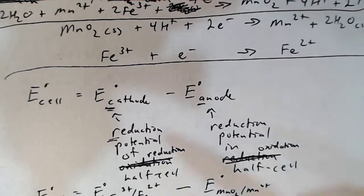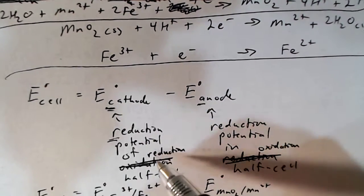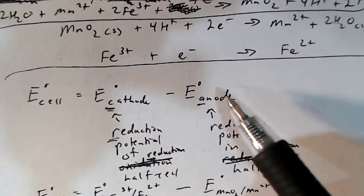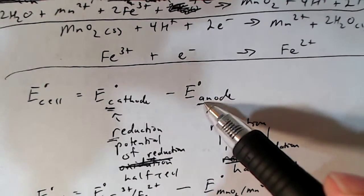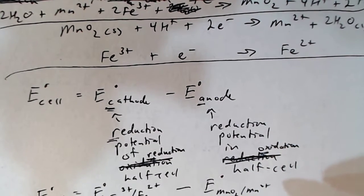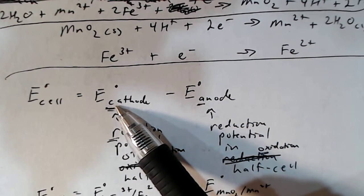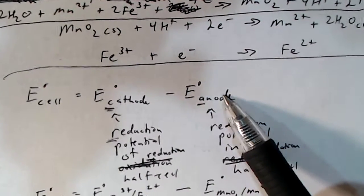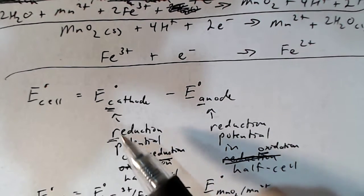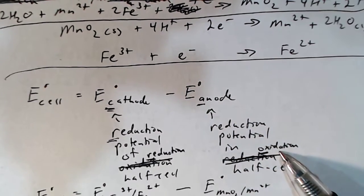The voltage of the cell is equal to the reduction potential of the reaction that occurs at the cathode minus the reduction potential of the reaction that occurs at the anode. At the cathode, which starts with a consonant, there's going to be reduction, which also starts with a consonant. At the anode, which starts with a vowel, there's going to be oxidation, which also starts with a vowel.